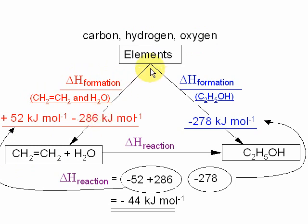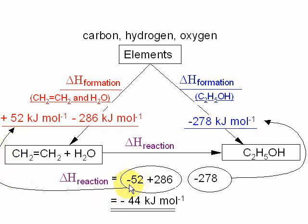On the other side of the Hess cycle, we have the enthalpy of formation of ethanol, which was given in the question — going from elemental carbon, hydrogen, and oxygen to ethanol itself. To work out delta H of the reaction, we start here, going up this arrow — so change the sign: the plus 52 becomes minus 52, and the minus 286 becomes plus 286. Once you've gone up to the elements, you come down this side and keep the sign the same — so that's still minus 278 — which gives an overall enthalpy change of minus 44 kilojoules per mole.